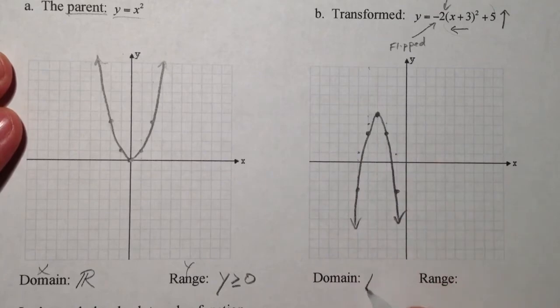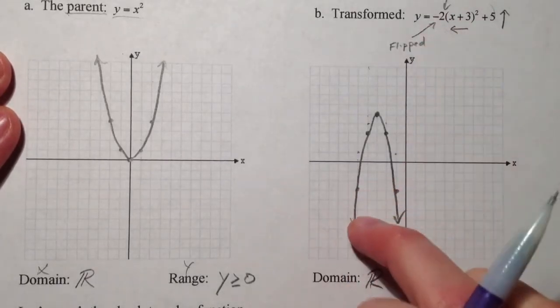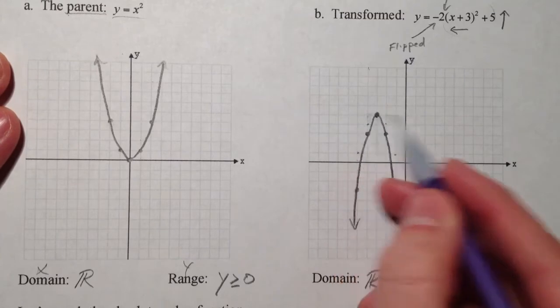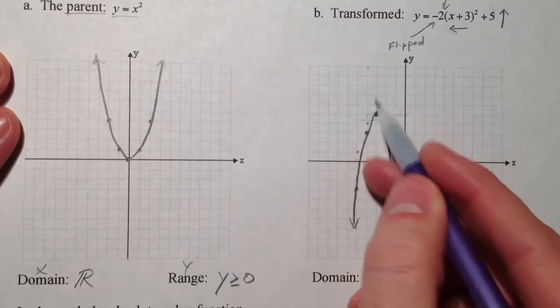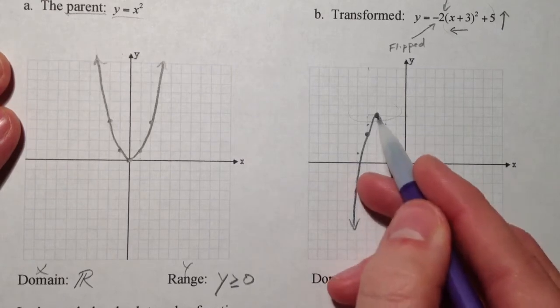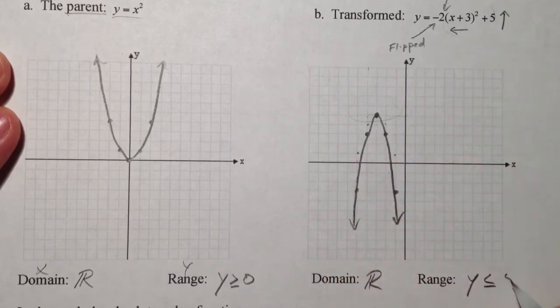The domain for all quadratics is going to be all real numbers, because we're allowed to do anything, we can plug anything in there. The range is going to be everything less than that point. That maximum is the highest it gets, so it's going to be y is less than or equal to, and that maximum was that 5, less than or equal to 5.